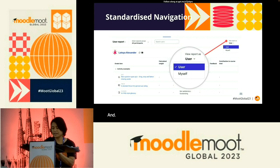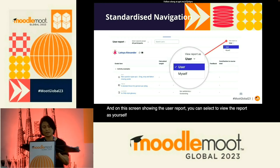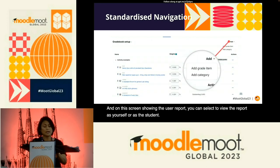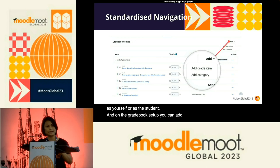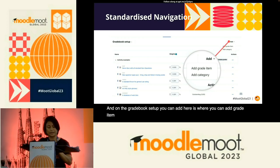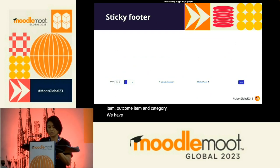On the user report, you can select to view the report as yourself or as the student. And on the gradebook setup, here is where you can add grade items, outcome items, and categories.